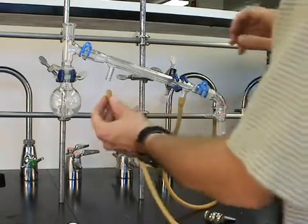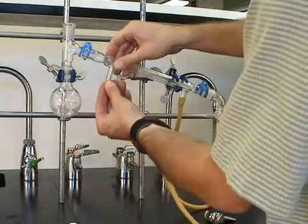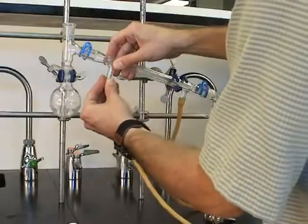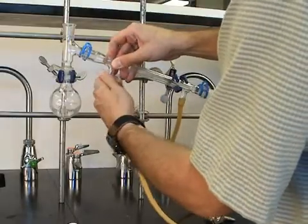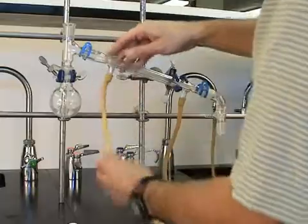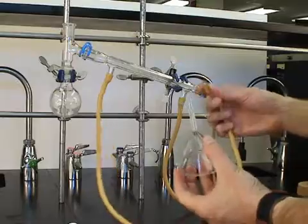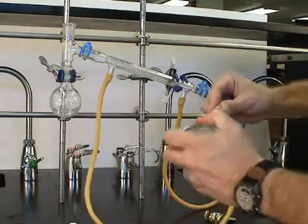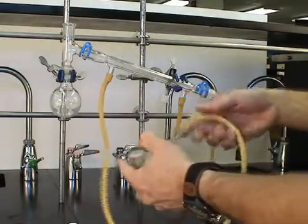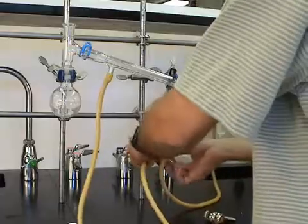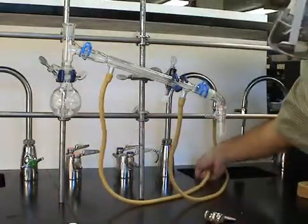A second piece of latex tubing is attached to the higher end of the condenser. And this is going to be the drain. In order to keep the hose down in the sink, we attach it to a glass stem funnel. This simply serves as a weight so that the hose doesn't accidentally come out of the sink.